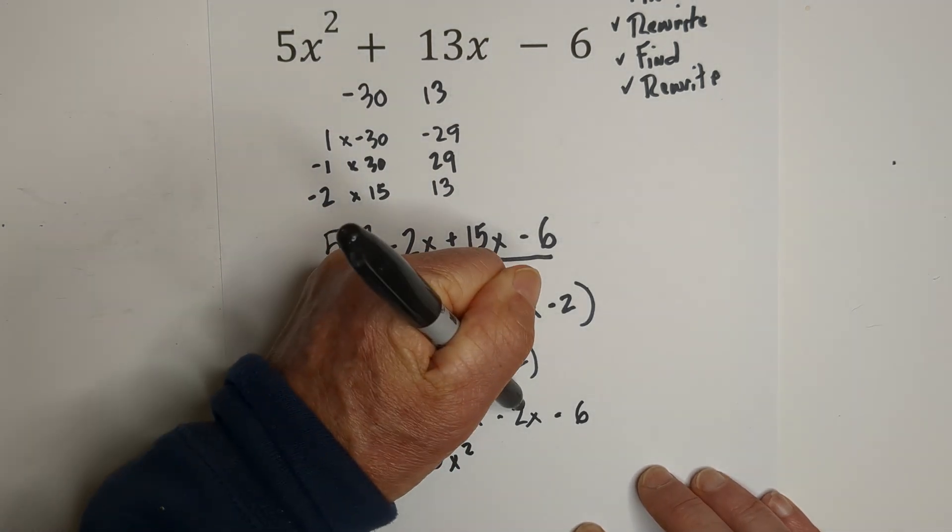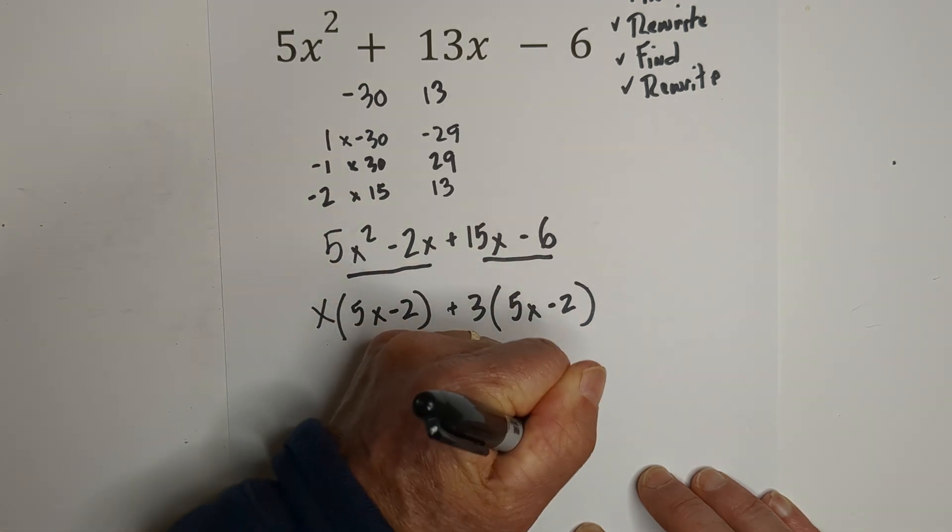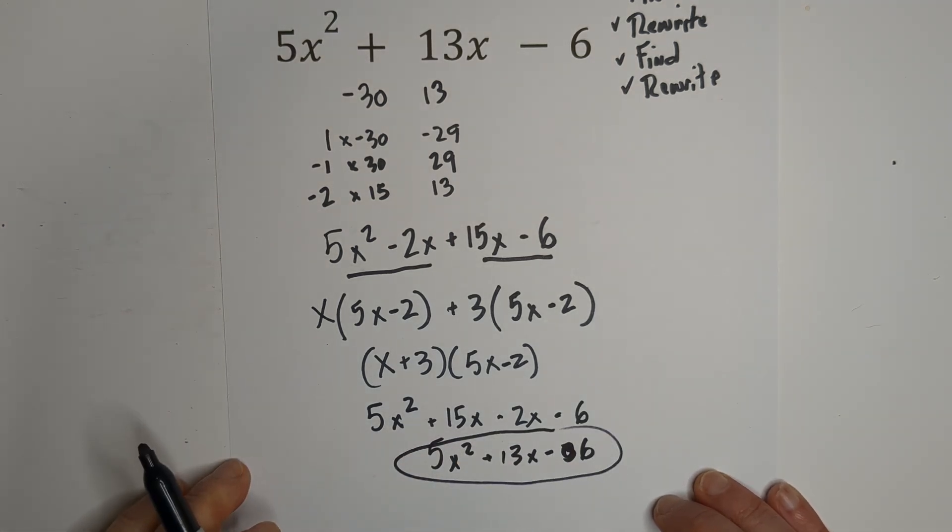And that equals 5x squared, a positive 15, a negative 2 is positive 13x minus, excuse me, not 3, minus 6. So, it looks like it works out.